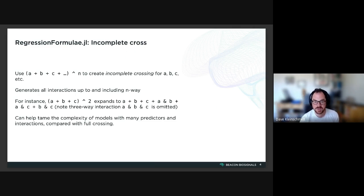So for instance, if we have something like (a + b + c)^2 raised to the second power here, that expands to main effects of a, b, and c and all of the two-way interactions a:b, a:c, and b:c.